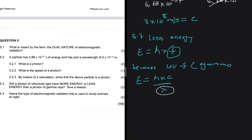The last question, 5.4, says: name the type of electromagnetic radiation that is used to study animals at night. That's quite an easy one — 5.4 is infrared. It's infrared.